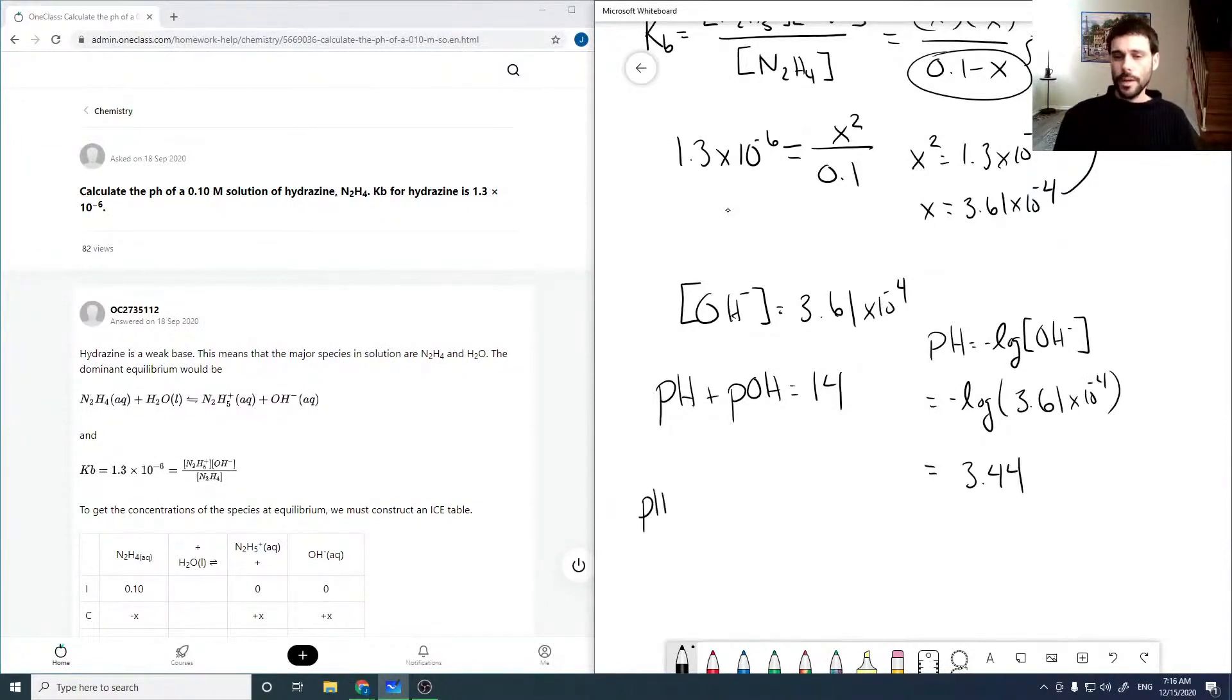And so then our pH is 14 minus 3.44, which comes out to be 10.56. So there's our pH.